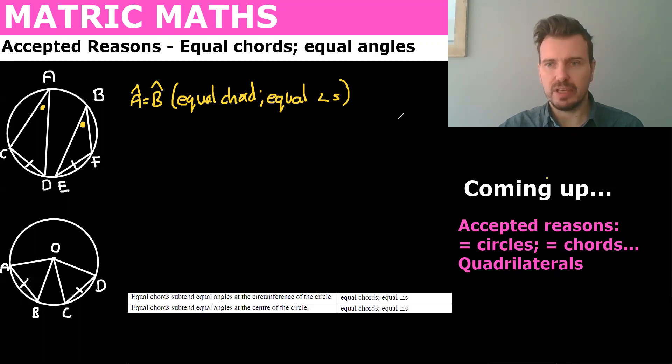And if we have the same thing, AB equaling CD, so two equal chords but they go to the center, we can also say that those angles subtended at the center are equal. So same reason, we could say angle AOB equals angle COD, and the reason is equal chords, equal angles.